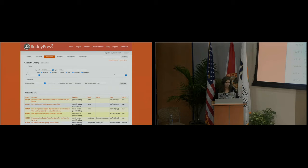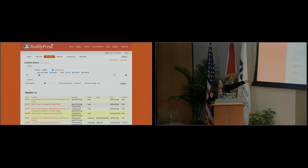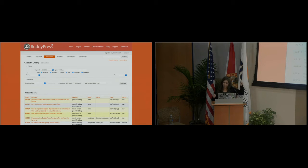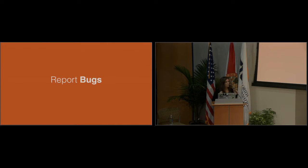On the BuddyPress Trac at trac.buddypress.org, you can find tickets — bugs, improvements, or small enhancements. There is a tag for beginner-friendly tickets: look for the keyword 'good first bug.' If you've never contributed and want to start with easy things, I recommend going to Trac, searching for that keyword, and making a simple first contribution. It's a great way to get familiar with good coding practices.